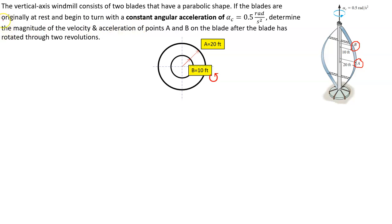The blades are originally at rest, and the angular acceleration is constant, so that means we've got a constant acceleration problem. That means we can use our four kinematic equations because we're dealing with constant acceleration. We need to determine the magnitude of the velocity and acceleration of points A and B after the blade has rotated through two revolutions. We start from zero and go two revolutions — two turns.